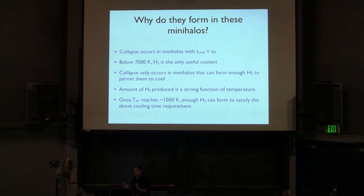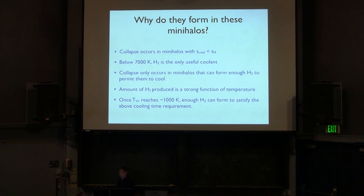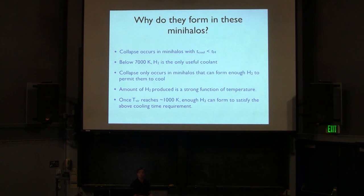This leads to a slightly counter-intuitive concept that will keep coming up: to get the gas to cool, you have to make it hot enough first. You'd imagine star formation would be better at lower temperature because the Jeans mass would be lower, but the problem is that the cooling time would simply be longer than the Hubble time and the gas would never collapse.